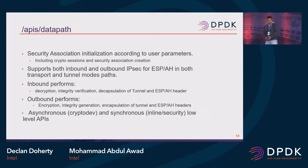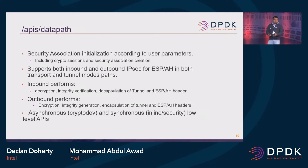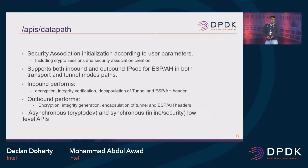For outbound traffic, it does the opposite: sequence number handling, adding the tunneling header or ESP header, and integration and encryption. For inline crypto, we don't need to do the encryption and decryption in software - those are done by the hardware. Sometimes also if the hardware supports the protocol, that would also be offloaded to the hardware for inline processing.